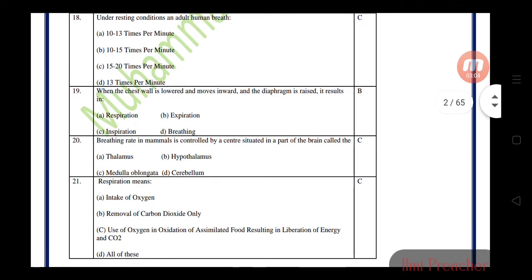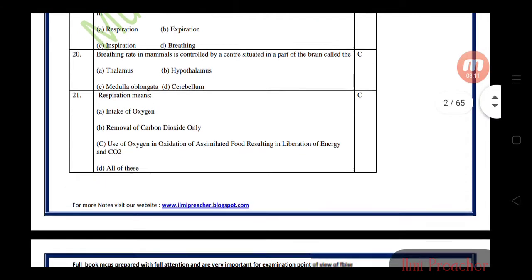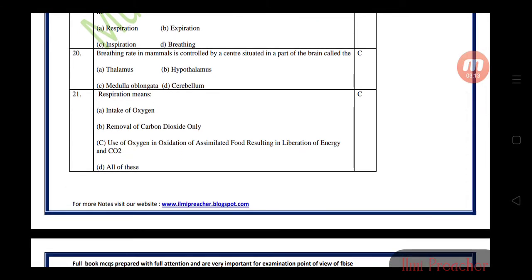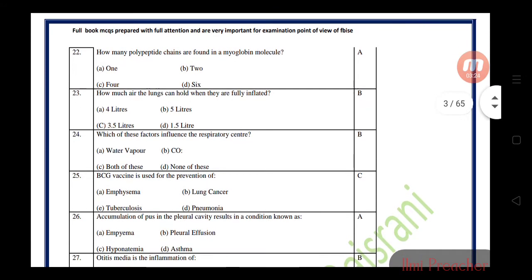When the chest wall is lowered and diaphragm is raised, it results in expiration. Breathing rate in mammals is controlled by a center situated in the medulla oblongata. Respiration means intake of oxygen and use of oxygen for oxidation of assimilated food, resulting in liberation of energy and carbon dioxide. How many polypeptide chains are found in myoglobin? Only one.